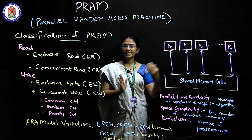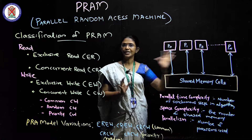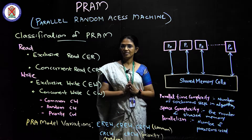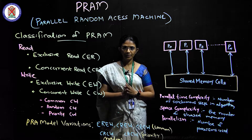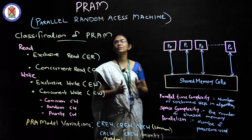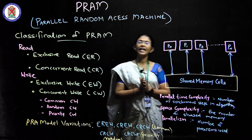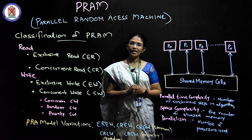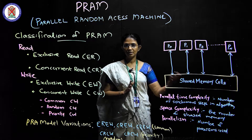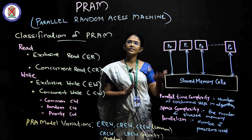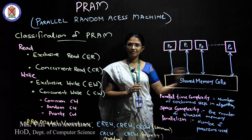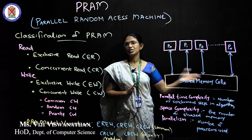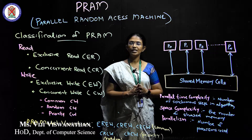Concurrent Read and Concurrent Write — this is the concurrency model. In this video we discussed the PRAM model, which is the Random Access Machine with its specifications and variations. This concludes our video.